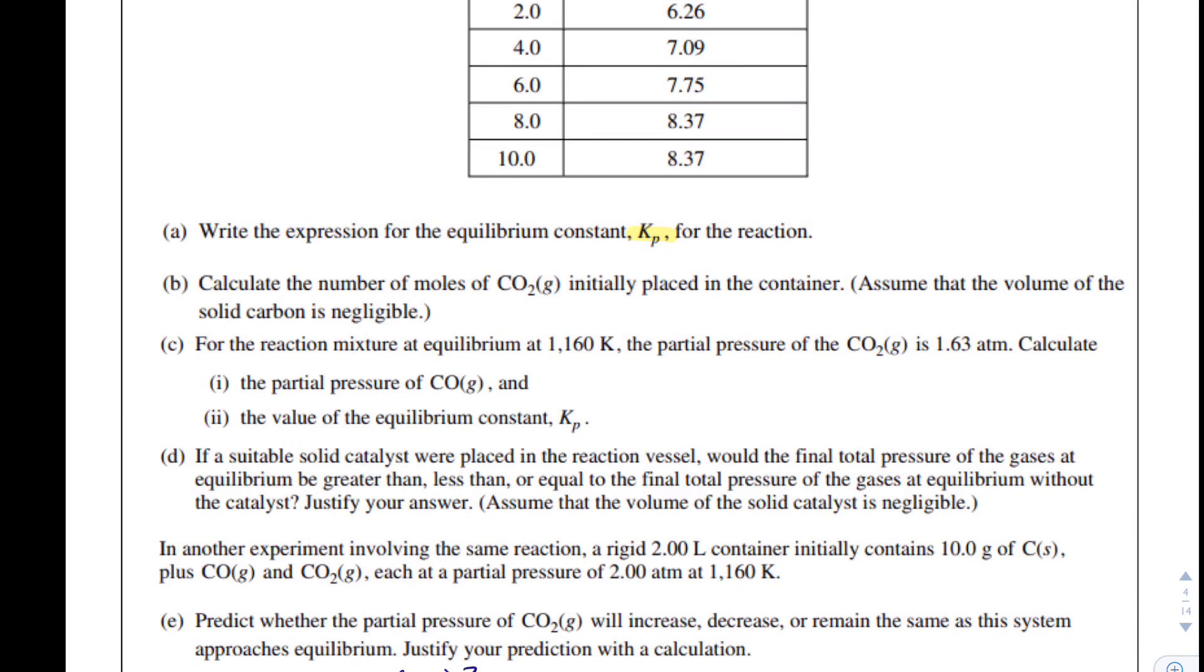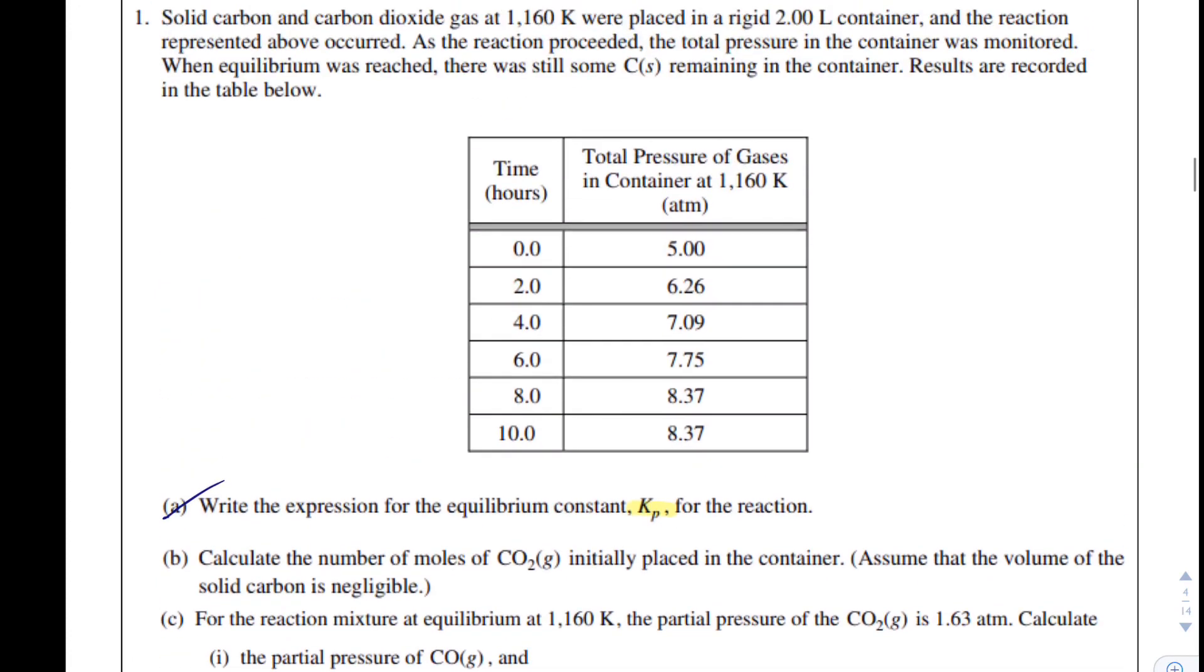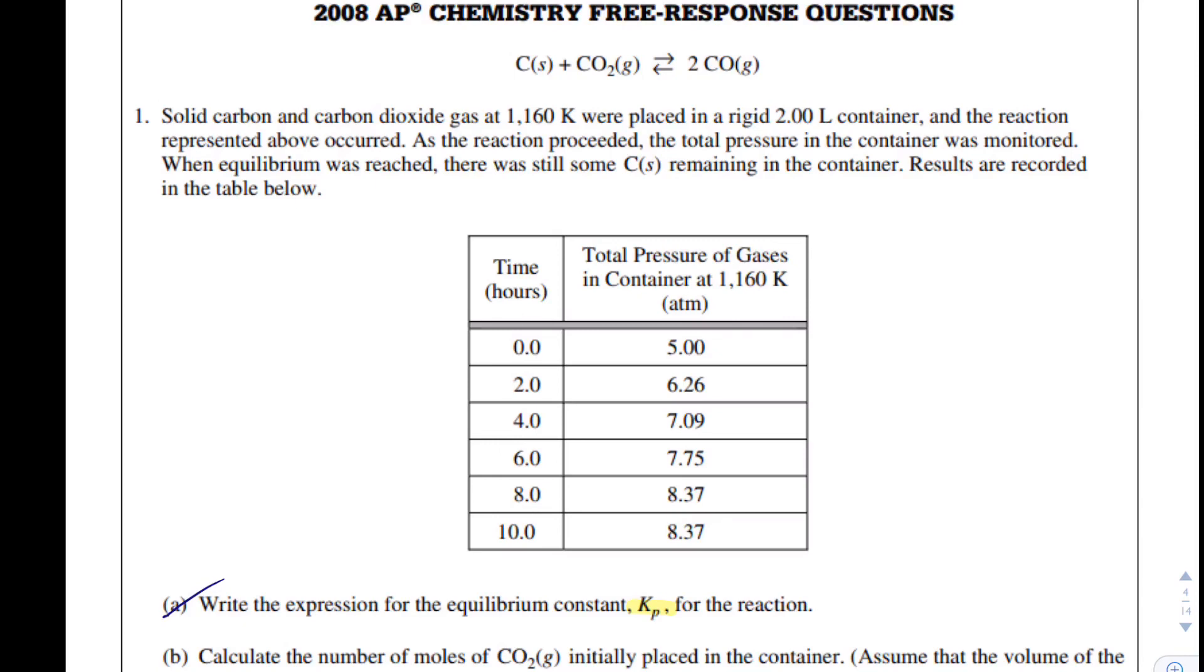Now, in B, it says calculate the number of moles of CO2 initially placed in the container. Assume that the volume of solid carbon is negligible. So because they say initially, that would be at time zero hours. So for part B, I'm going to use the ideal gas law, PV equals nRT.